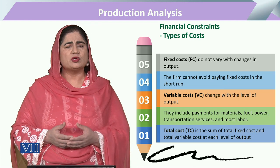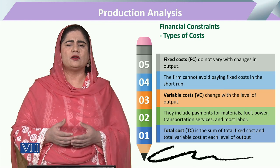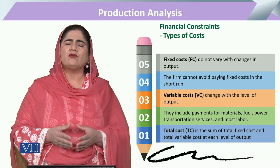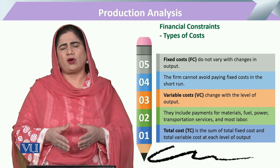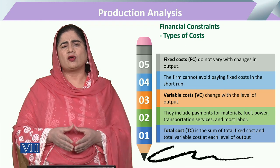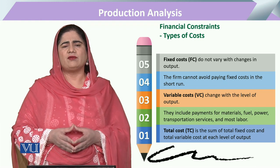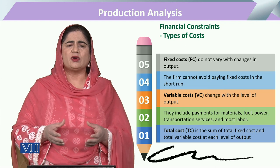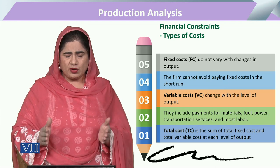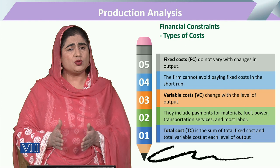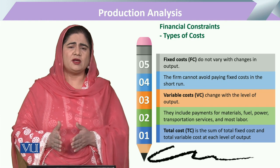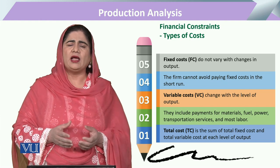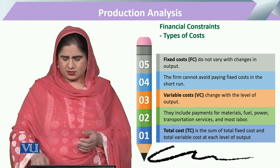So mostly we will be dealing with these two types of costs when we have to account for all costs in our registration system or accounting framework. When we add these two costs — variable cost plus fixed cost — we will have the total cost.